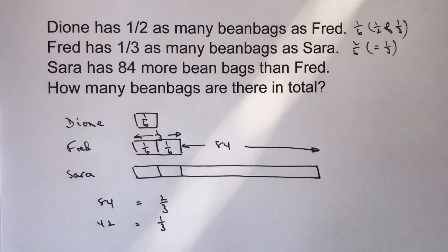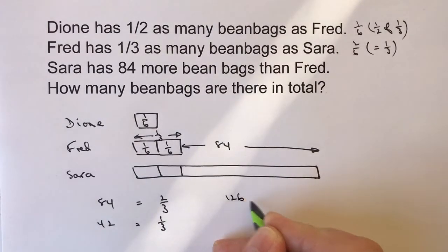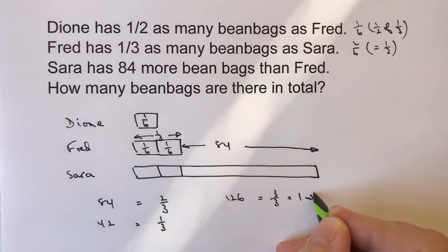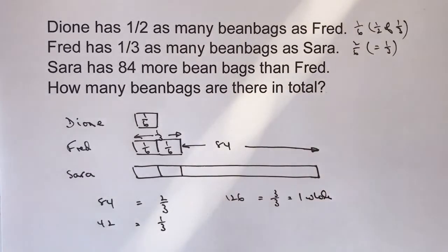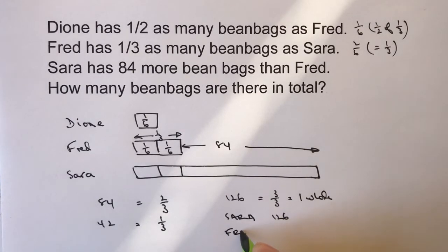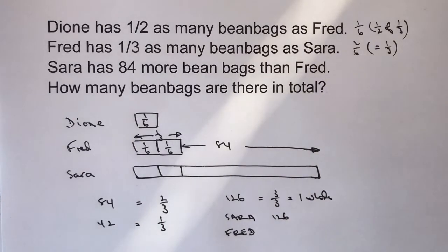So if 42 equals one third, then three thirds is going to be three times 42, which gives us 126. That is equivalent to three thirds, which is one whole. That's the key piece of information we need, because that's the amount of bean bags Sarah has. So Sarah must have 126 bean bags. Fred must have a third of 126, which is 42 — we worked that out already. So Fred has 42.